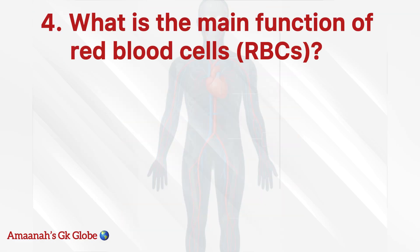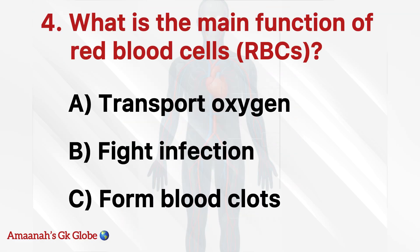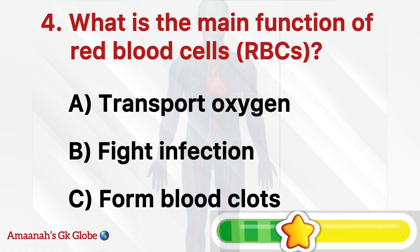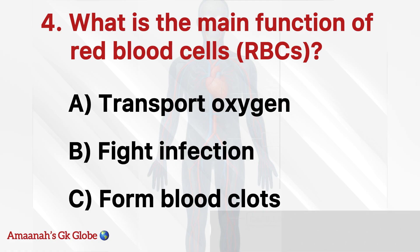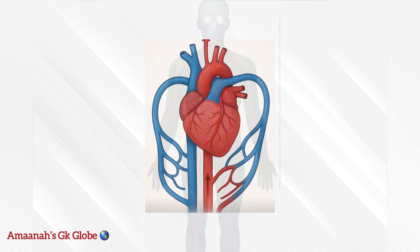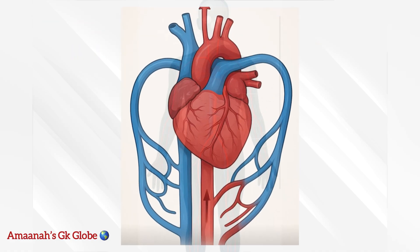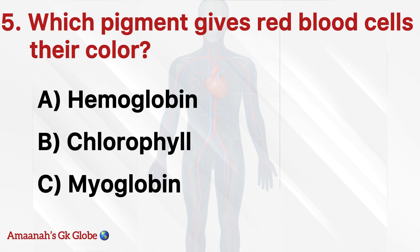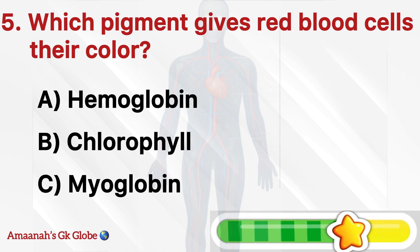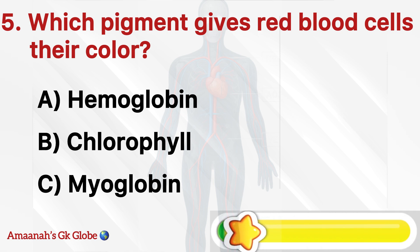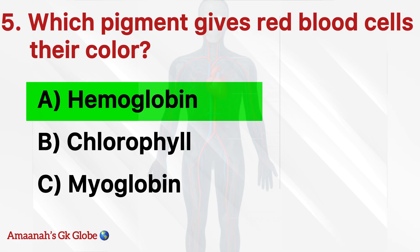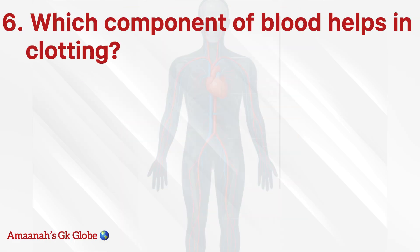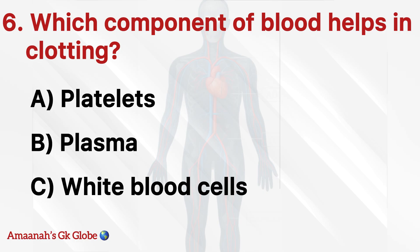Vein. What is the main function of red blood cells (RBCs)? Transport oxygen. Which pigment gives red blood cells their color? Hemoglobin. Which component of blood helps in clotting?